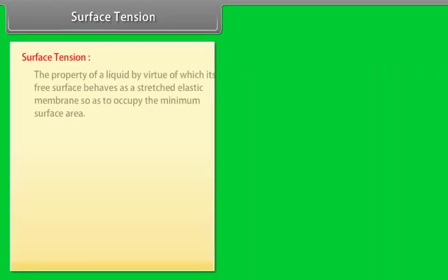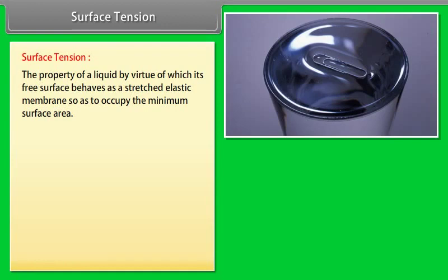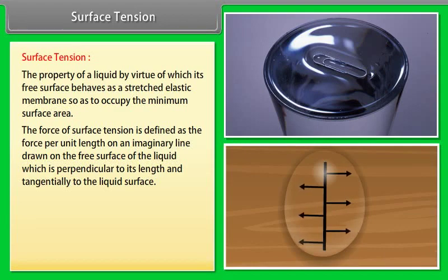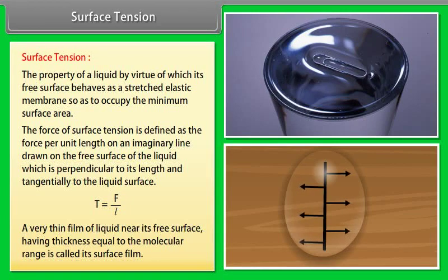Surface tension is the property of a liquid by virtue of which its free surface behaves as a stretched elastic membrane so as to occupy the minimum surface area. The force of surface tension is defined as the force per unit length on an imaginary line drawn on the free surface of the liquid, perpendicular to its length and tangential to the surface: T = F/L. A very thin film of liquid near its free surface, with thickness equal to the molecular range, is called its surface film.